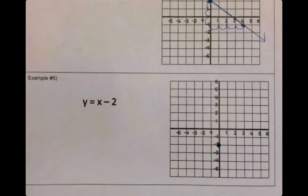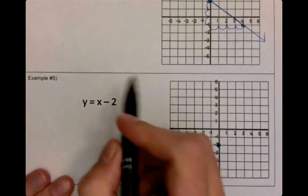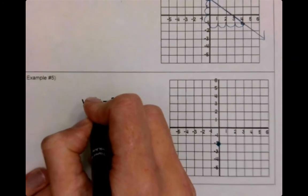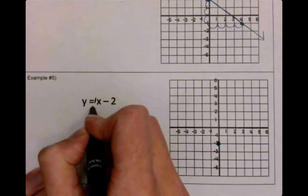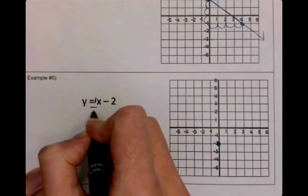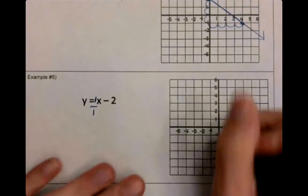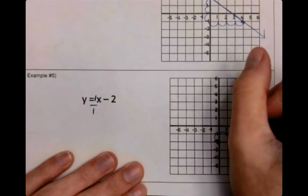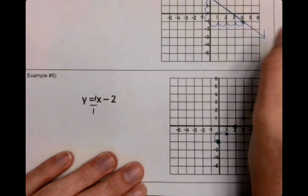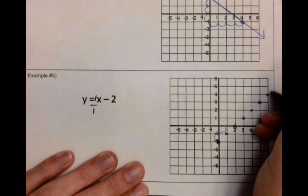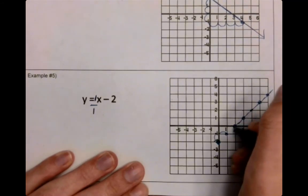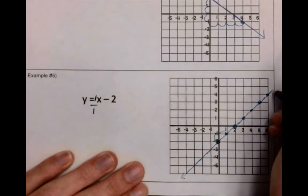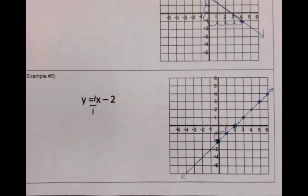So remember, kind of like how we talked about number three, we've talked about this as well. When you do not see a number in front of X, what does that mean? It is like an invisible one, right? What goes underneath that invisible one? A one. So that's kind of like saying, okay, I'm going to rise one and run one, rise one, run one, rise one, run one. Okay? You got this. You got this. Great job so far.